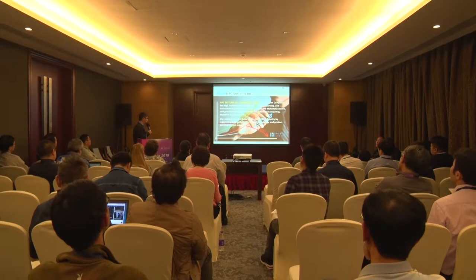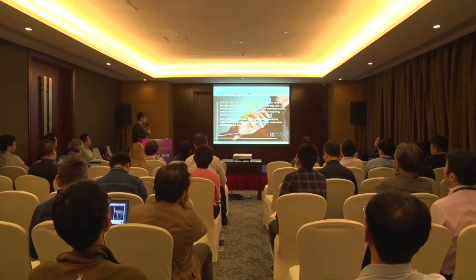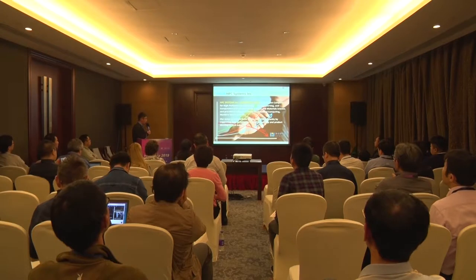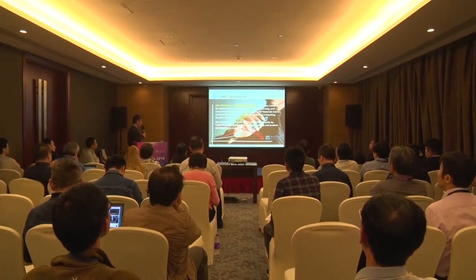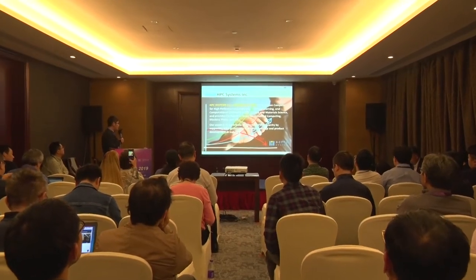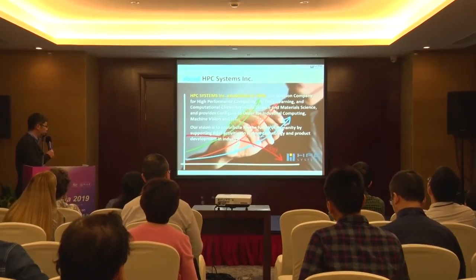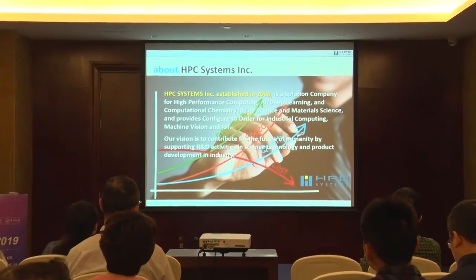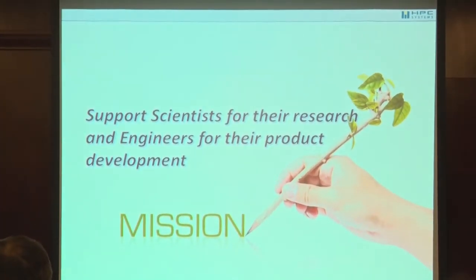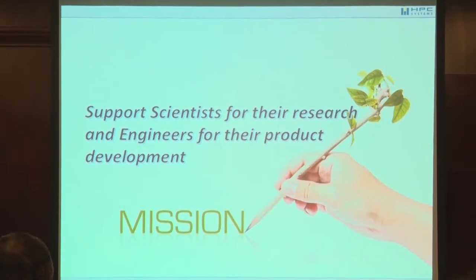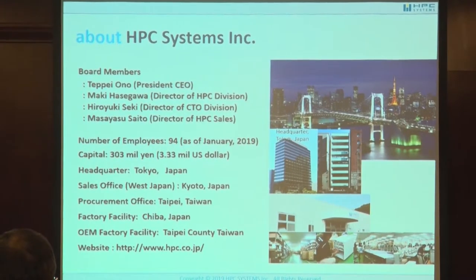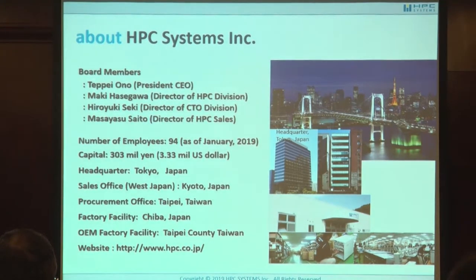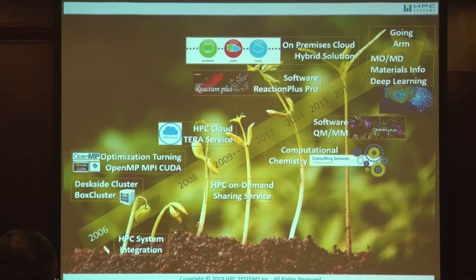Our company was established in 2006 and is a solution company for high-performance computing and AI deep learning, computational chemistry, life science, and material science. We also provide configured systems for industrial computing, machine vision, and IoT. Our mission is to support scientists in their research and engineers in their product development. We are located in Tokyo, Japan, with offices also in Kyoto, and we have factories in Japan and Taiwan.